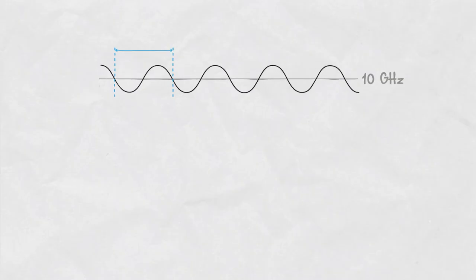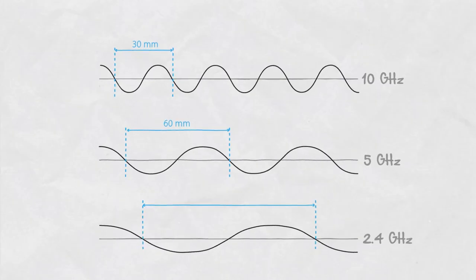For example, at 10 gigahertz the wavelength is roughly 30 millimeters long, at 5 gigahertz it's roughly 60 millimeters long, and at 2.4 gigahertz it's roughly 120 millimeters long.